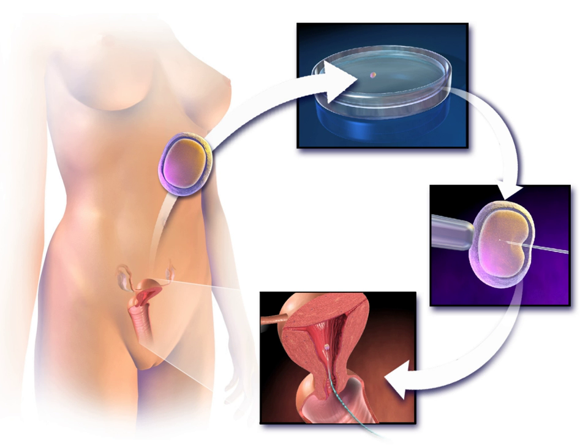In the egg donor process, eggs are retrieved from a donor's ovaries, fertilized in the laboratory with the sperm from the recipient's partner, and the resulting healthy embryos are returned to the recipient's uterus. Sperm donation may provide the source for the sperm used in IVF procedures where the male partner produces no sperm or has an inheritable disease, or where the woman being treated has no male partner.